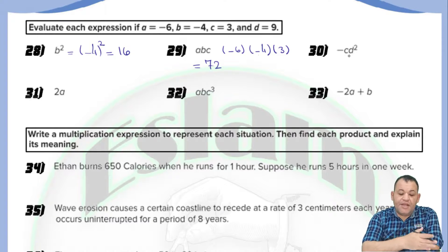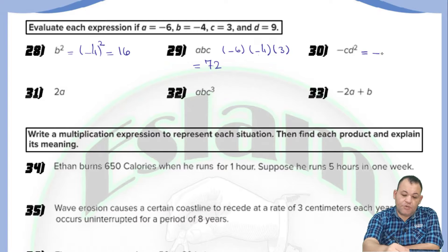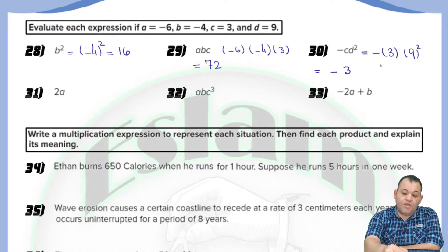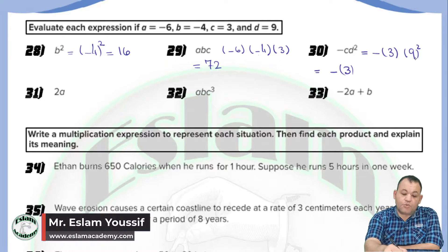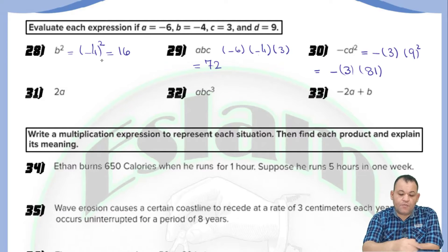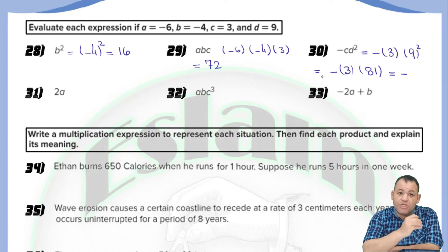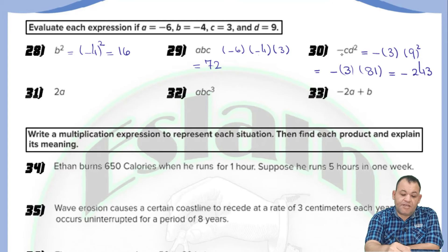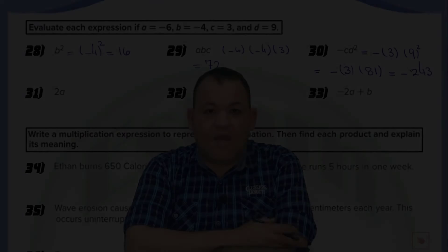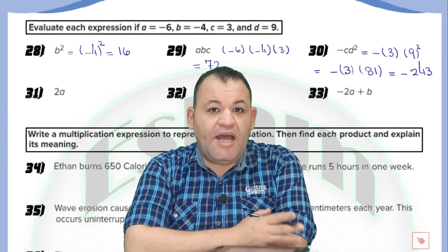For question number 30, we have negative c times d to the power 2. First, substitute: c equals 3 and d equals 9, giving us negative 3 times 9 to the power 2. Using order of operations, calculate the power first: 9 to the power 2 equals 81. Then multiply: 3 times 81 equals 243. We have a negative sign outside, so the answer is negative 243. That's how we multiply integer numbers and evaluate any expression.